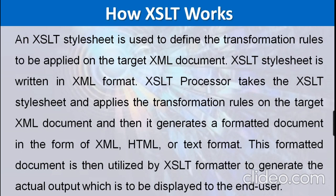When you want to work with XSLT, the XSLT stylesheet is used to define the transformation rules. These transformation rules are written in XSL files, which we create against the XML document. The XSLT stylesheet is written in XML format. The XSLT processor takes the XSLT stylesheet, applies the transformation rules on the target XML document, and generates a formatted document — either in XML, HTML, or text format. This formatted document is then utilized by the XSLT formatter to generate the actual output displayed on the browser or to end users.